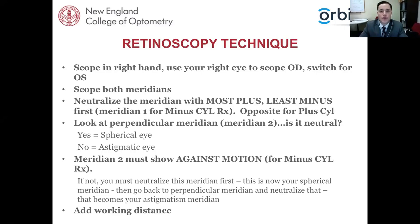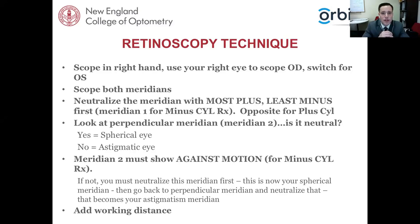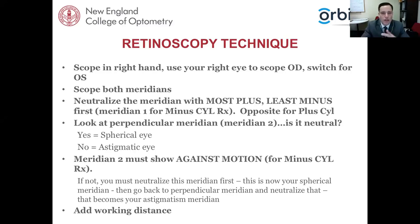Don't be stressed about always finding the correct first meridian. Just pick a meridian, find neutrality, and when you go to the second principal meridian, if it's not the motion you want, you can adjust — reverse the axis by 90 degrees. That's how you'll get through retinoscopy faster. In the clinic with many demands on your time, not agonizing over which is the most plus or least minus meridian first will help you work faster. Once you've found neutrality in both principal meridians, add in your working distance.